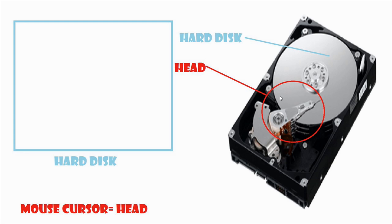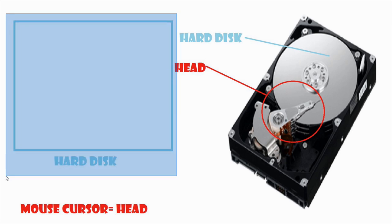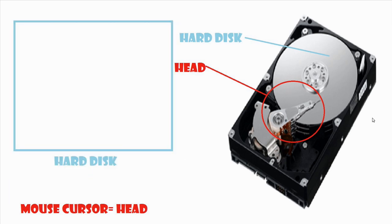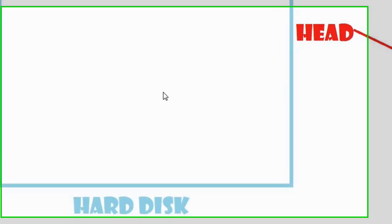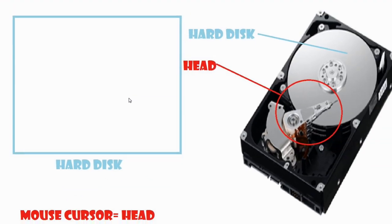But you might be saying, where does disk defragmentation come into play? I'm going to be starting this demonstration right now. The hard disk on this hard drive will be represented by this blue box, labeled 'hard disk' so you won't get confused. And the head will be represented by the mouse cursor — the little pointy thing you see here.